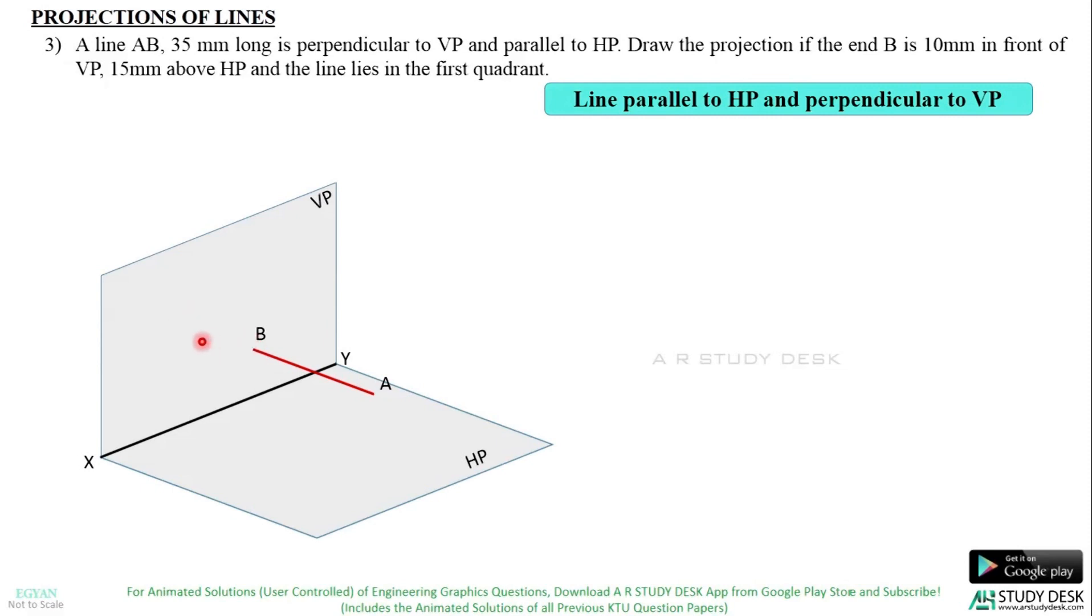B is 10mm in front of VP and 15mm above HP. At that time also, the line AB is parallel to HP and perpendicular to VP. Since that probability is there, this particular statement is given in the question. So the line can be only in the first quadrant.